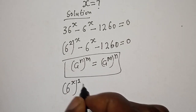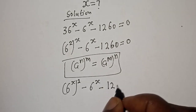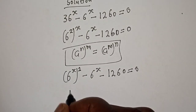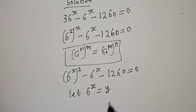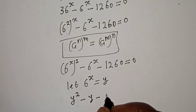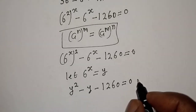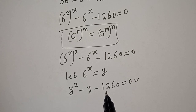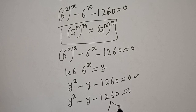Then this can be written as 6 raised to power 2s minus 6 raised to power s minus 1260 is equal to zero. Now let 6 raised to power s equal y. Then y squared minus y minus 1260 is equal to zero. This is a quadratic equation which can be solved using either factorization method or the quadratic general formula, but in this case I'm going to make use of the factorization method.